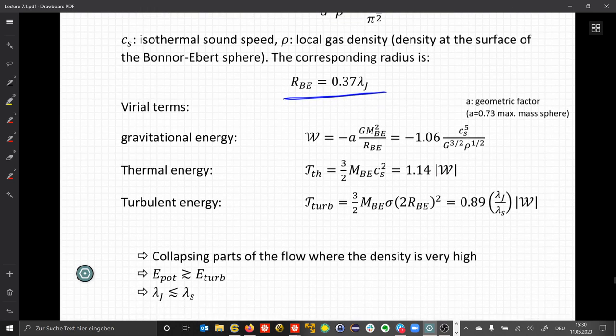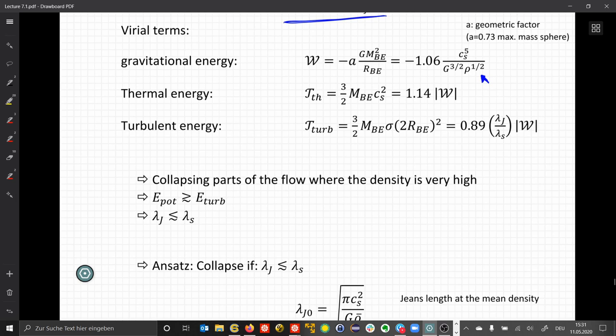The corresponding radius of these spherical objects is about 40% of a Jeans length. When we write down our virial terms, so the gravitational energy, the thermal energy and the turbulent energy, then we find that the stability is collapsing. The collapsing parts of the flow are there, where the density is very high, because higher density decreases the kinetic energy.